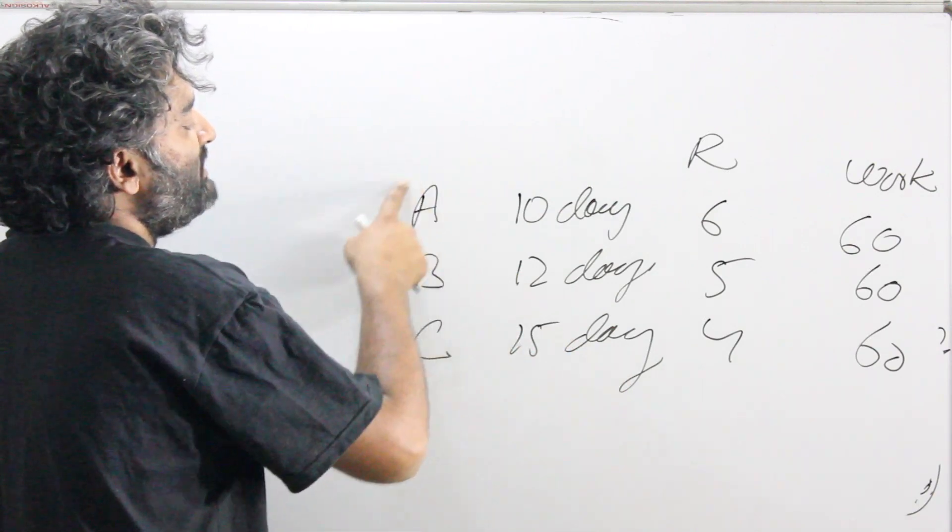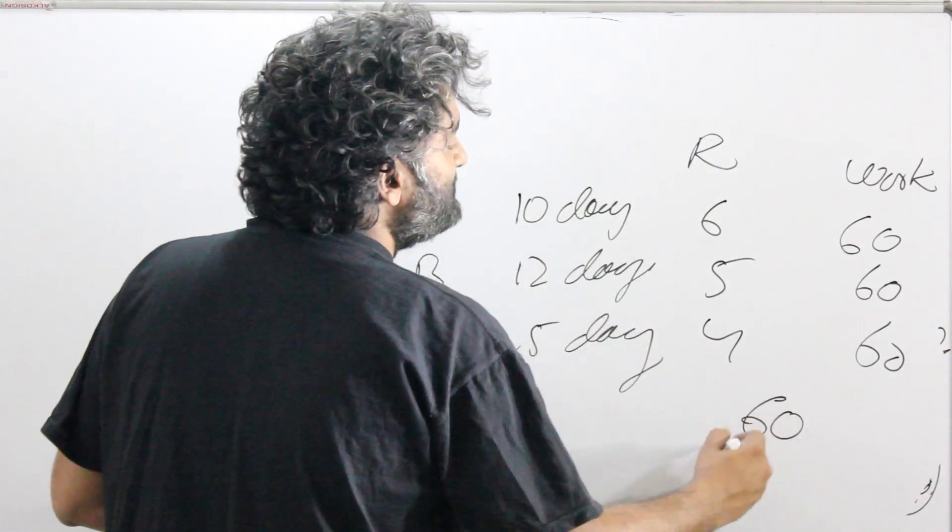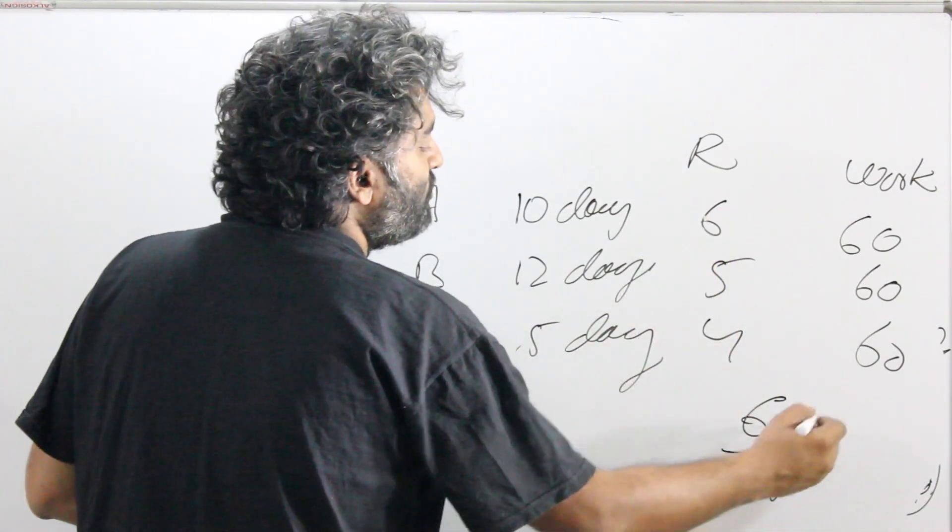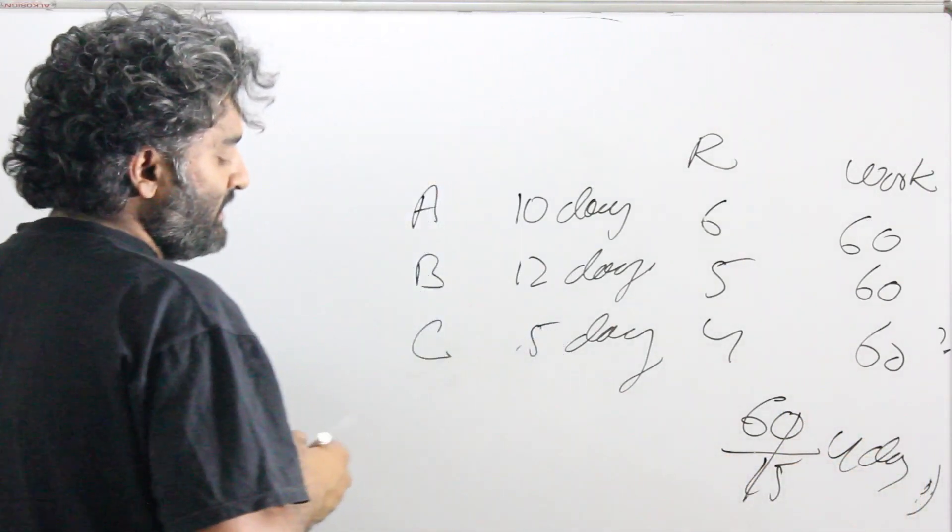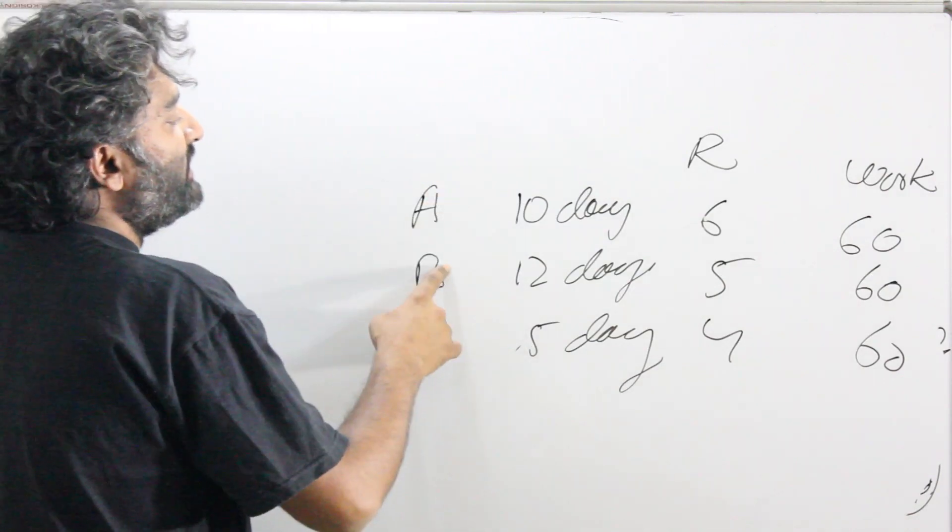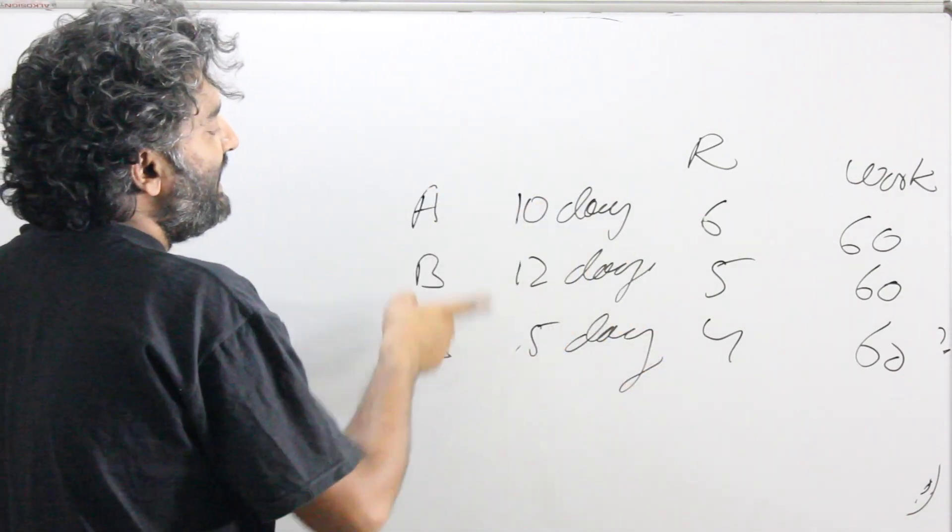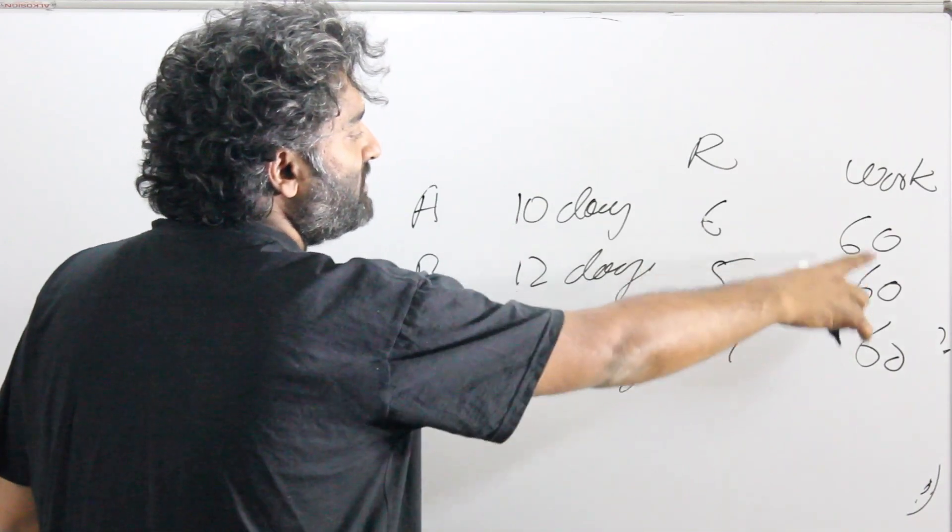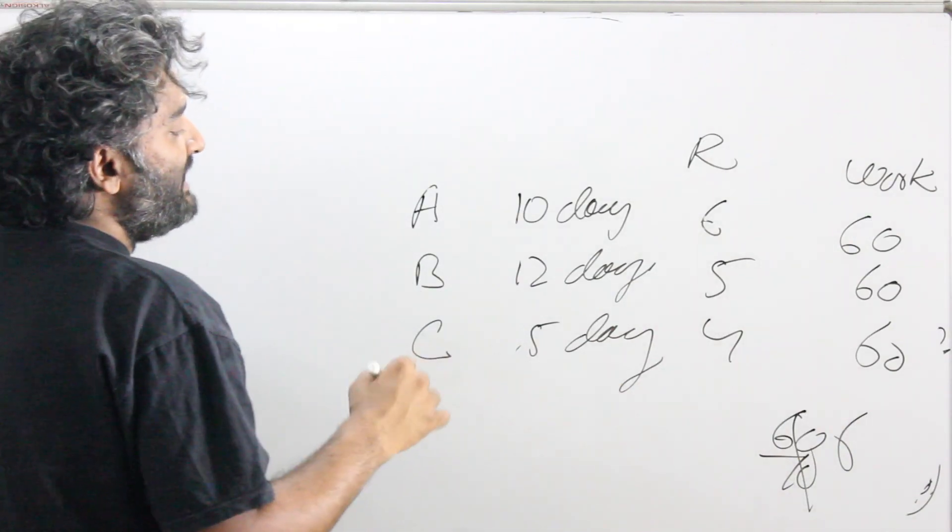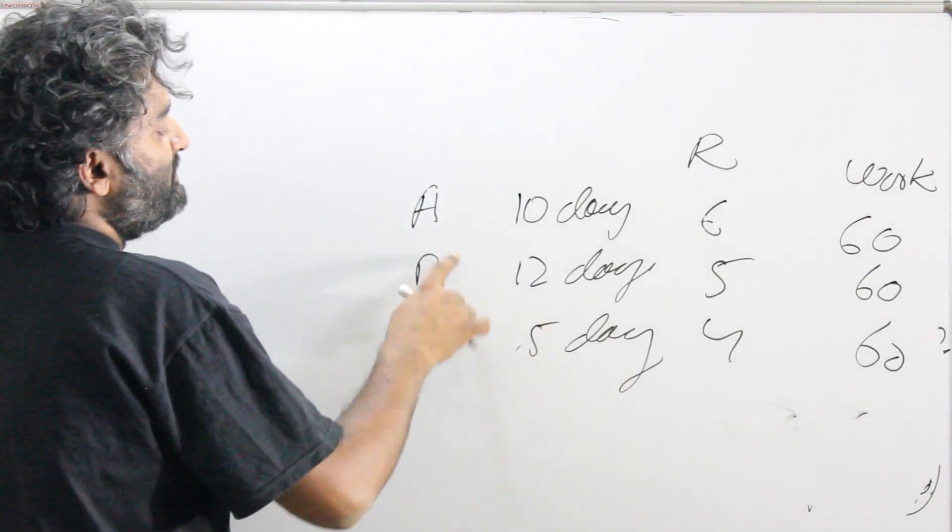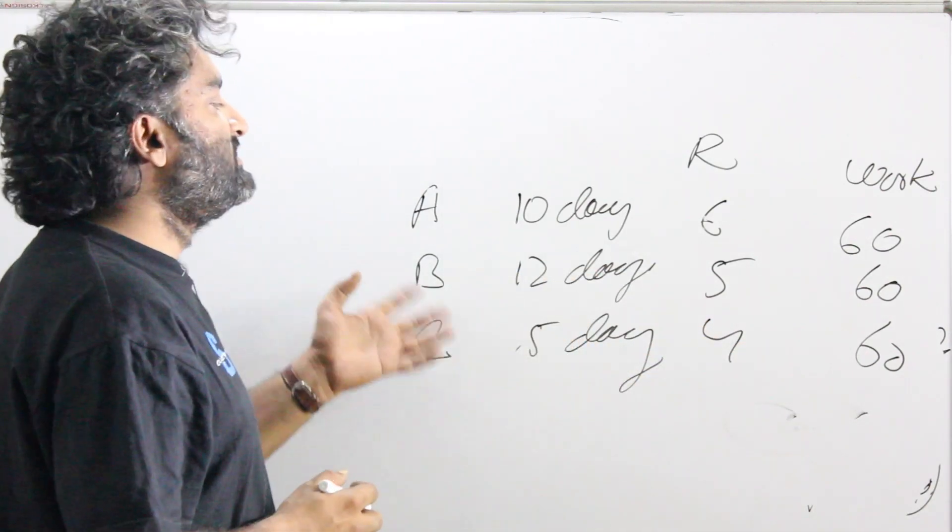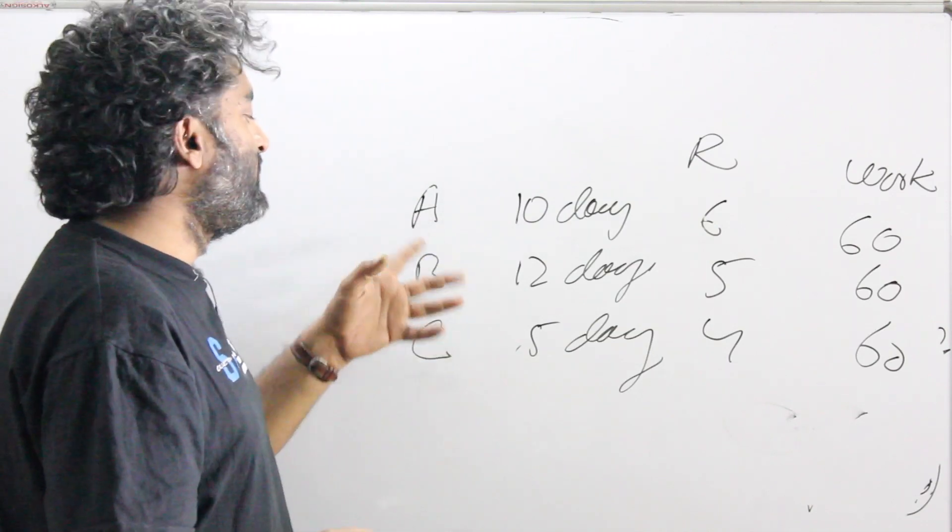I could have also asked you that only A and B work together, how long would it take? We've already worked that out. Only A and C, my combined rate would have been 10. Work is 60. 60 by 10, I would have gotten 6 as the time taken. I could have also figured B and C, my answer would have been 60 by 9. This is a very basic extension that the story will work for any number of participants.